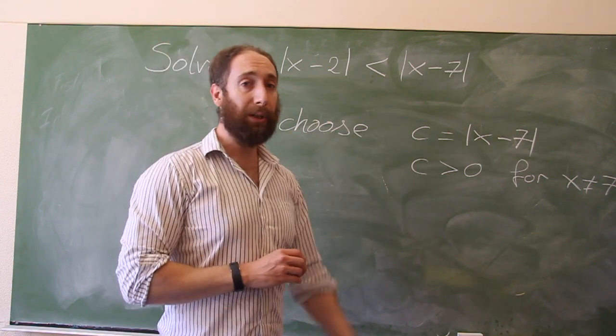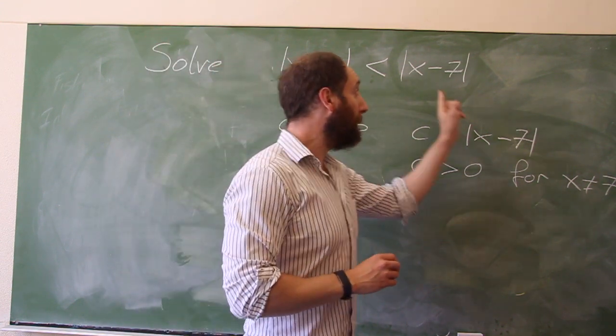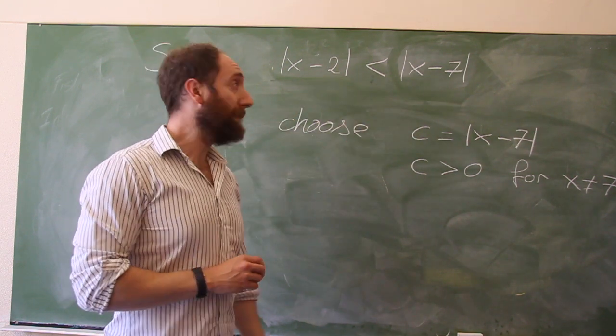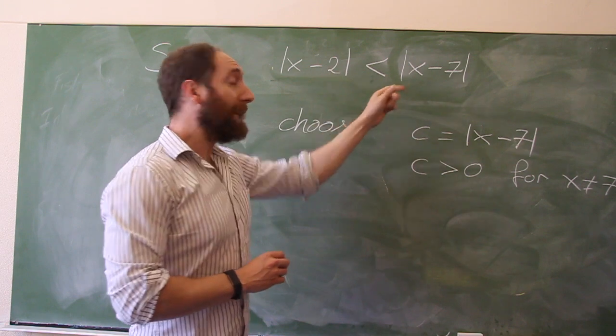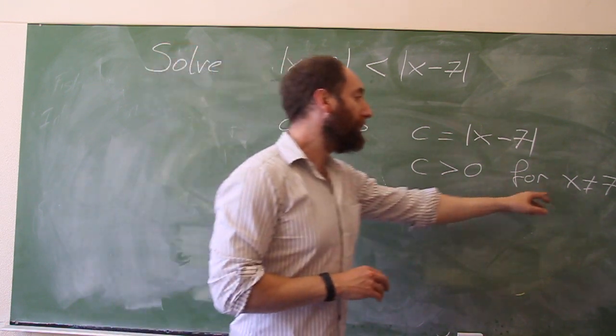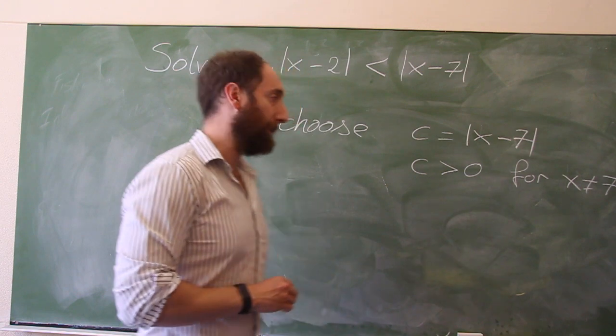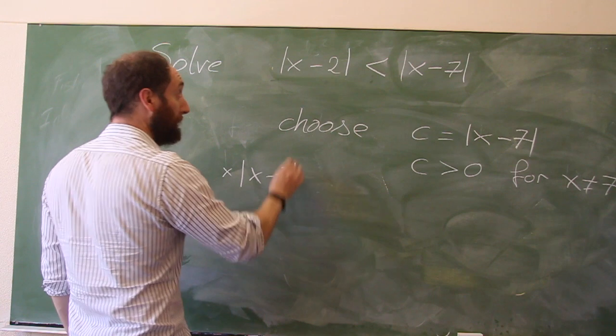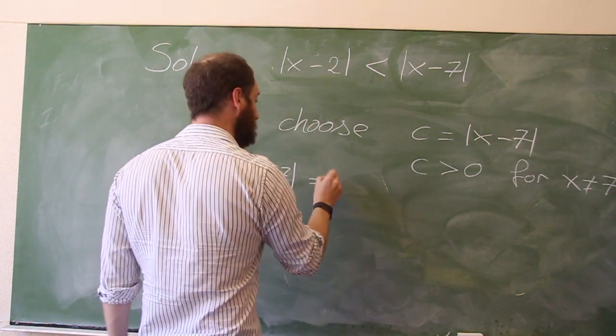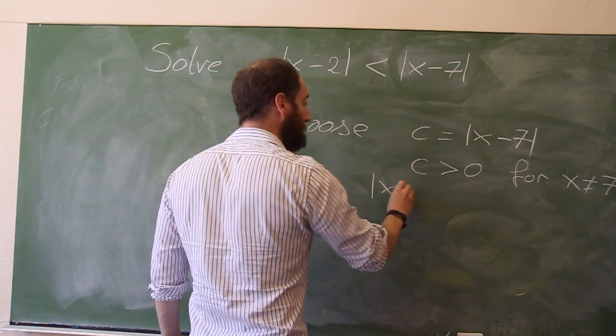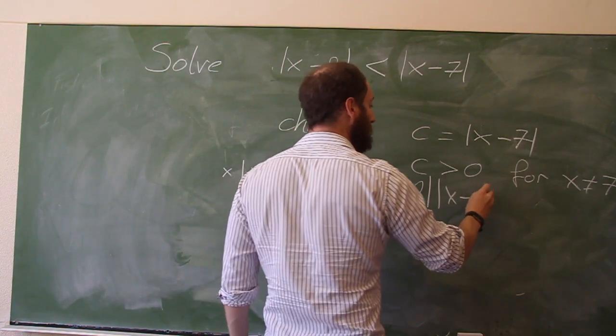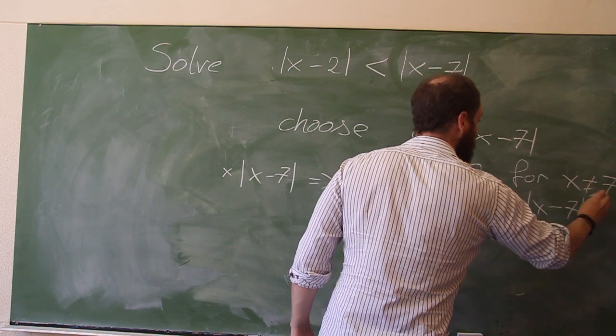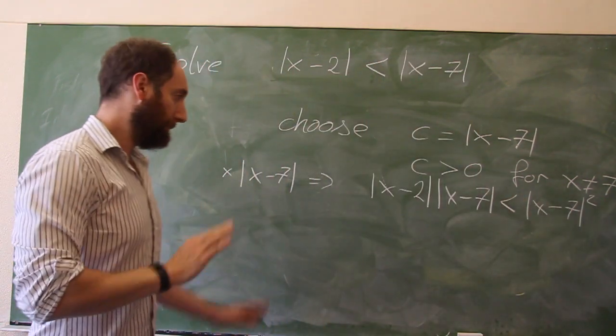However, we look at this equation and we see that if X is equal to 7, well, then that's 0 on the right, and this is 5 on the left. This certainly isn't satisfied for X equals 7. So in fact, we never want to have X equal to 7. So we're fine. So let's multiply by X minus 7. Multiply both sides here. What do we get? We get X minus 2 times X minus 7 is less than X minus 7 squared. That's fine.